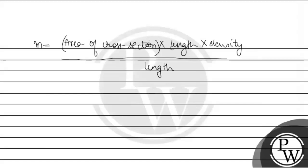This is our formula. We can see that length is cancelled out. So, m will be equal to area into density.